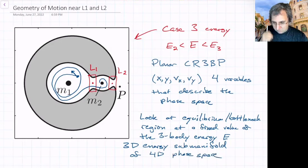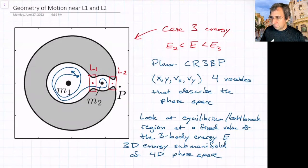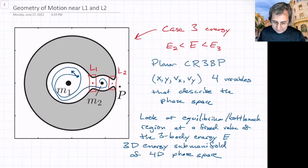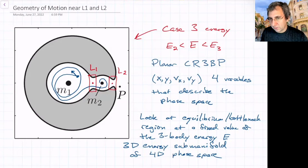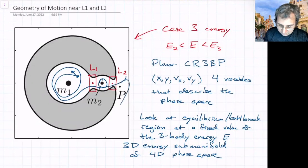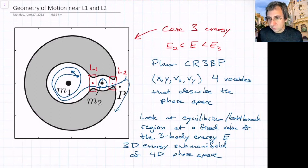Last time I quickly said some things about the geometry of the motion near L1 and L2. I want to take it a little easier, back up, and really carefully go through it — treating them both in the same way. Things that go from the region around mass M1 to the region around mass M2 have to go through this L1 region. So it's really important to look at these equilibrium regions.